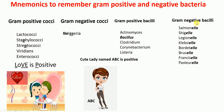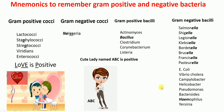That's the first list of gram-negative bacilli — bacteria whose names end with ELLA. Now there's another list. These are also gram-negative bacilli: E. coli, Vibrio cholera, Campylobacter, Helicobacter, Pseudomonas, Bacteroides, Hemophilus, and Yersinia. This first ELLA list is easy to remember since all names end with ELLA.